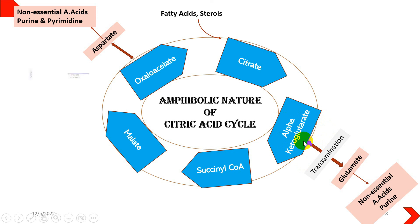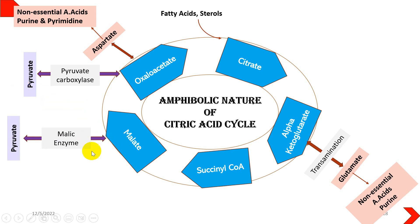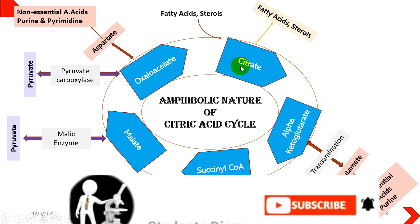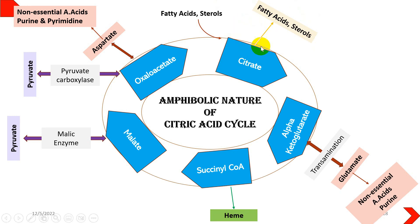Oxaloacetate can also be converted into pyruvate by pyruvate carboxylase enzyme, and that pyruvate can then be converted into glucose through gluconeogenesis. Similarly, malate can be converted into pyruvate by malic enzyme, again yielding glucose. Citrate can be converted into fatty acids and sterols, utilized in certain steroid hormone production. Succinyl-CoA can be converted into porphyrin and heme, an important molecule of hemoglobin.